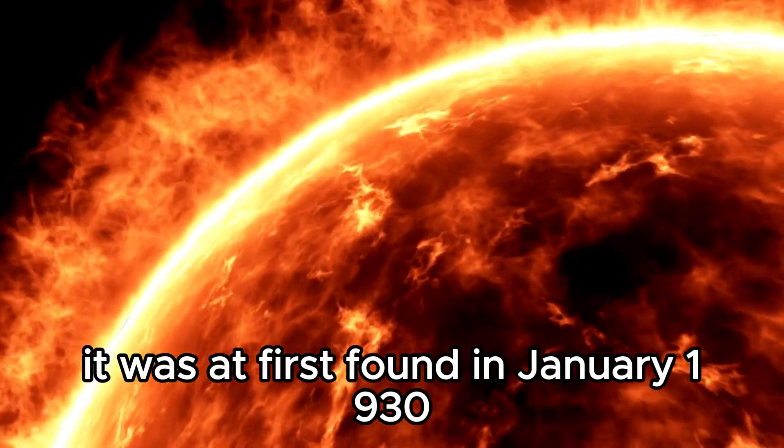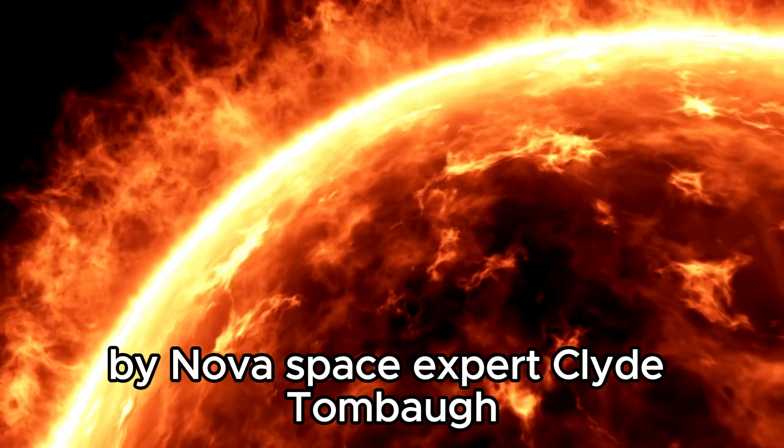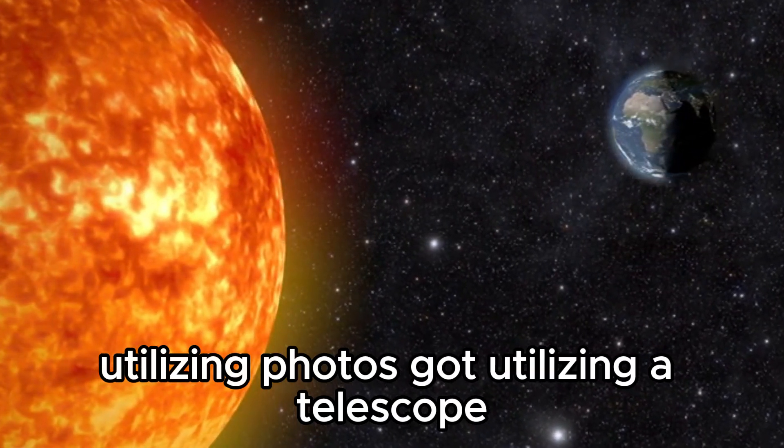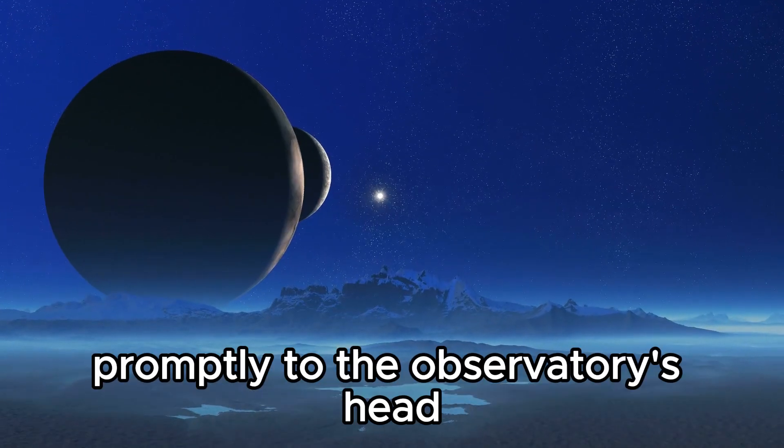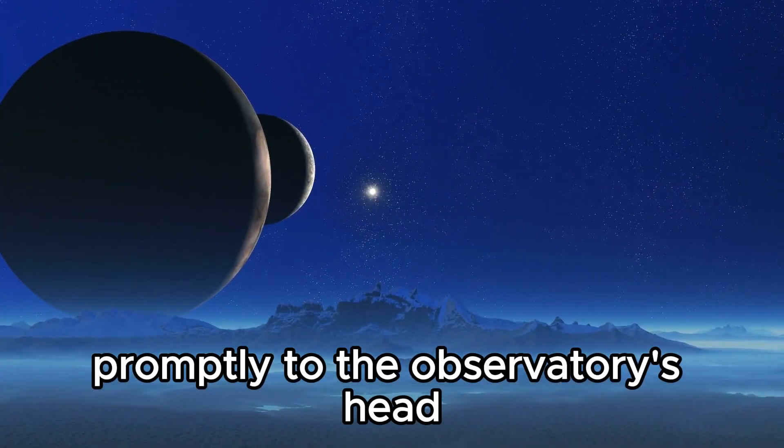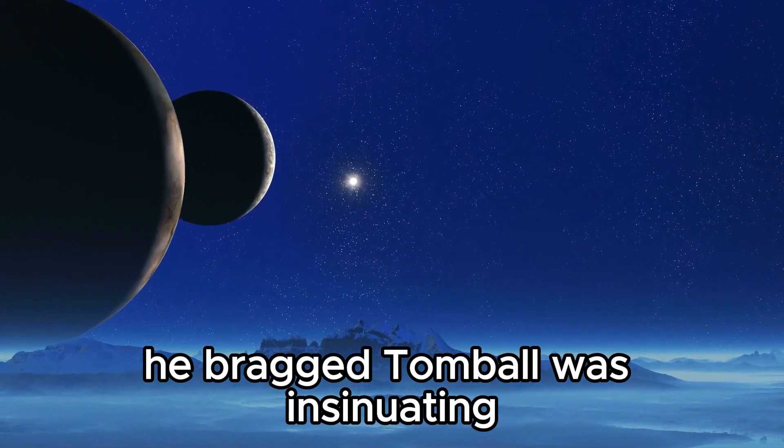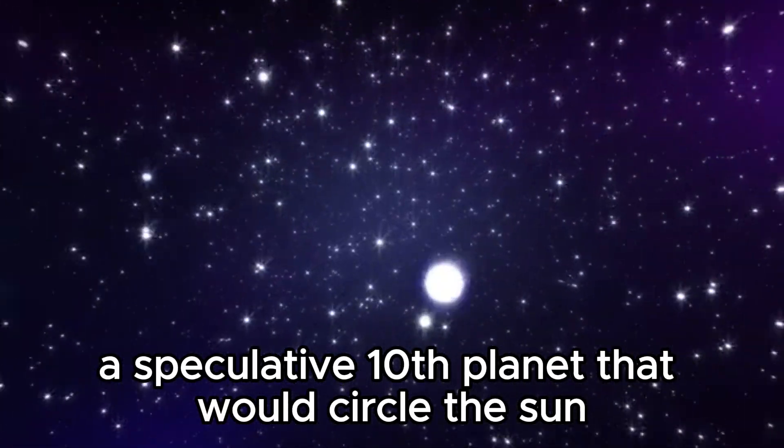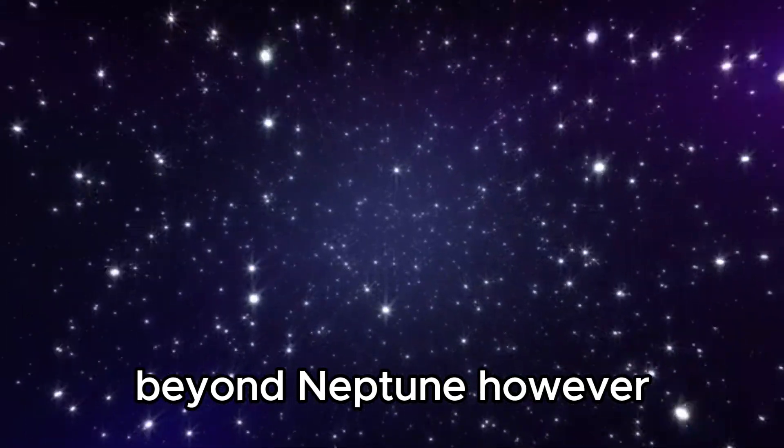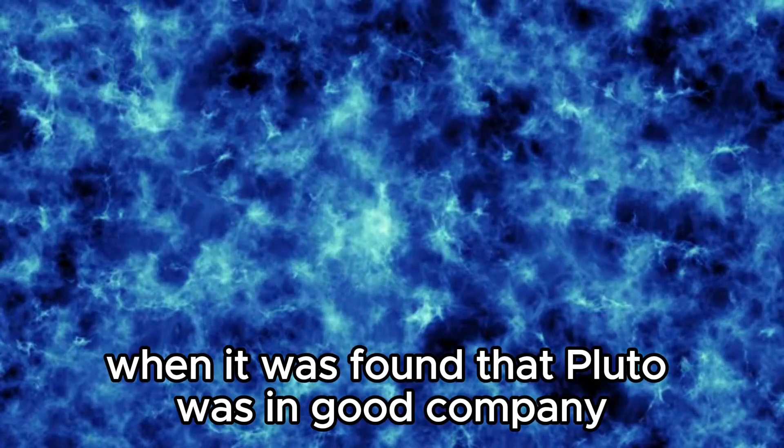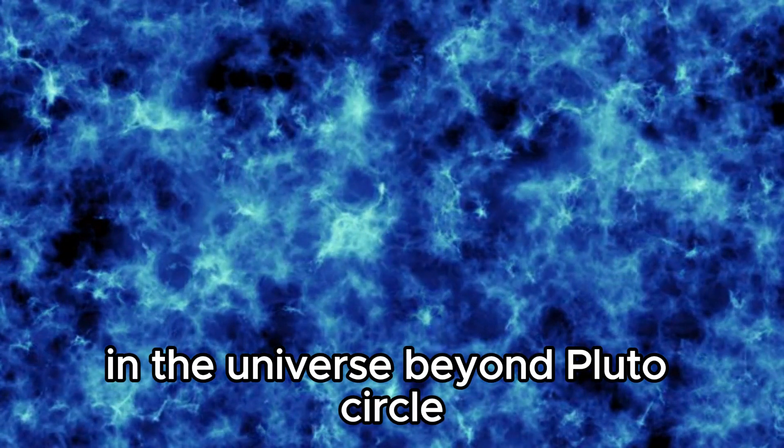It was initially discovered in January 1930 by amateur astronomer Clyde Tombaugh using photographs obtained with a telescope. Tombaugh reported his finding immediately to the observatory's head: I have found your planet X. Tombaugh was referring to a hypothetical tenth planet that would orbit the sun beyond Neptune. However, things took an odd turn when it was found that Pluto was not alone in the universe beyond its orbit.